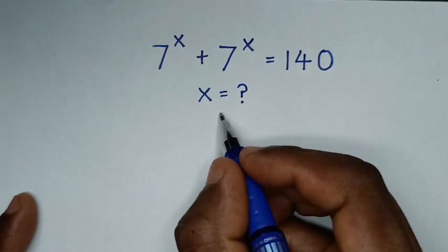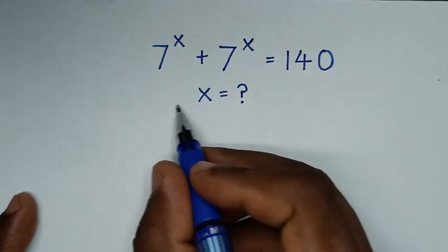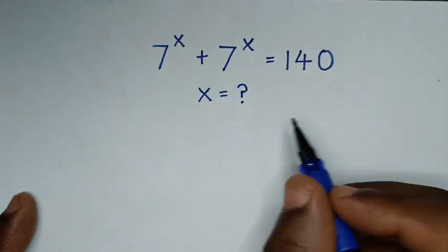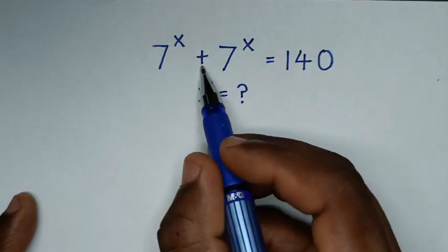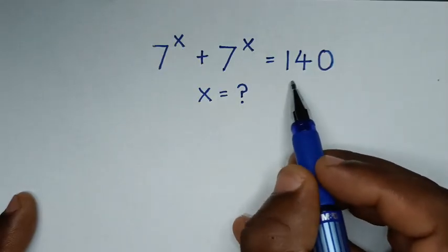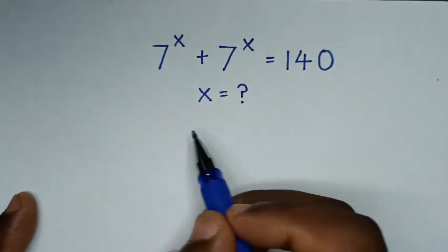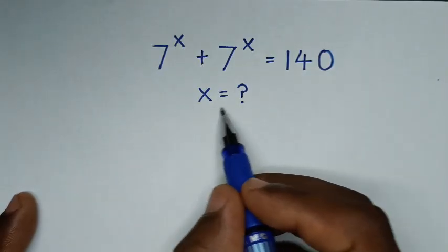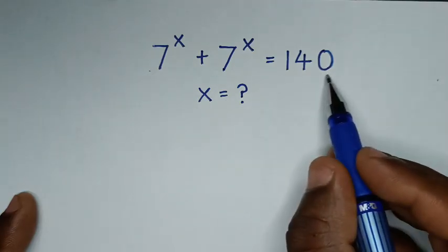Hello, you are welcome to solve this math problem, which is 7 power of x plus 7 power of x is equal to 140. We need to find the value of x from this equation.